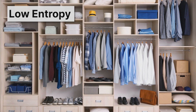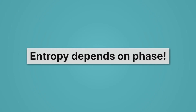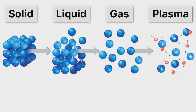Let's move on from these household examples to something a bit more science-y. Let's talk about phase. Entropy depends on phase. So we've talked about solids, liquids, gases, and plasmas. Which one of those has the most clearly defined structure? Which one looks the most ordered to you? It's the solid.